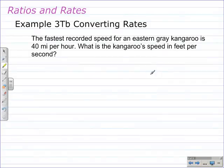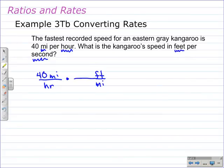The fastest recorded speed for an eastern gray kangaroo is 40 miles per hour. What is the kangaroo's speed in feet per second? So we're going to change miles per hour into feet per second. So the way I start this is, I'll write down 40, and that's miles, and that would be over hours. And I ultimately want to change miles into feet. The conversion factor for miles into feet, I'm going to tell you right now, but first I'll put the feet in the numerator, and the miles in the denominator, because the miles are going to divide out.